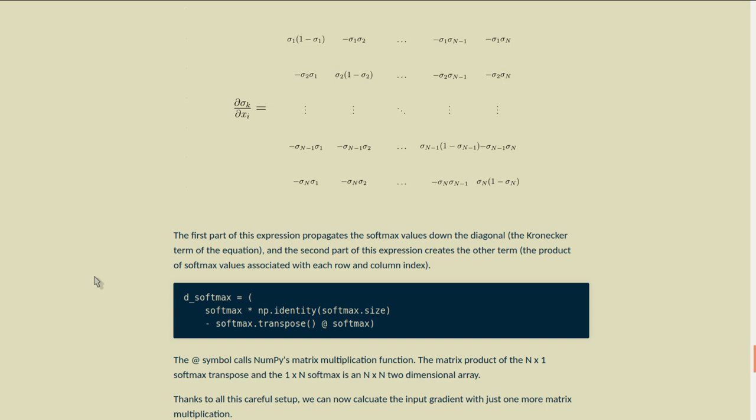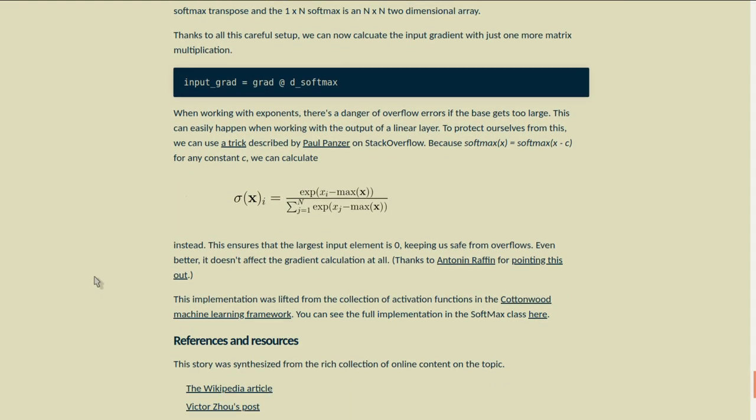Thanks to all this careful setup, we can now calculate the input gradient with just one more matrix multiplication. Input grad equals grad matrix multiplied by D softmax. When working with exponents, there's a danger of overflow errors if the base gets too large. This can easily happen when working with the output of a linear layer. To protect ourselves from this, we can use a trick described by Paul Panzer on Stack Overflow.